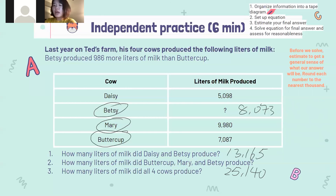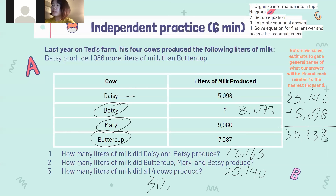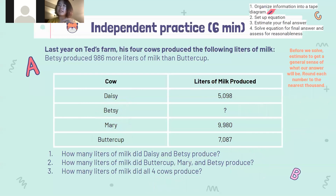And let's look at our final one: how many liters of milk did all four cows produce? Since we know these three cows can produce 25,140 liters of milk, we just need to add Daisy's amount. We directly use 25,140 plus 5,098: 0 plus 8 is 8; 4 plus 9 is 13, carry 1; 1 plus 1 is 2; 5 plus 5 is 10, carry 1; 2 plus 1 is 3. So 30,238. That's what all four cows can produce last year. And that's all for the independent practice.